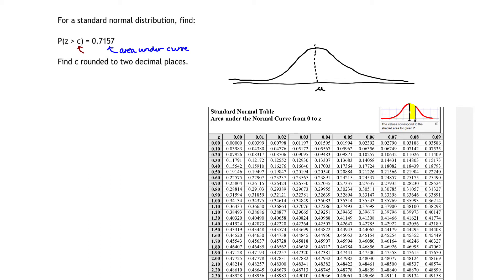I am looking for a C value right here that corresponds to an area under the curve, where that area is represented from all Z values greater than C. So I'm going to be shading to the right of C 71.57% of the area under the curve.